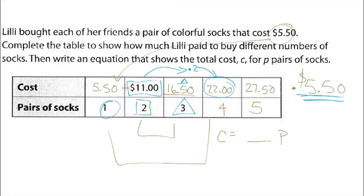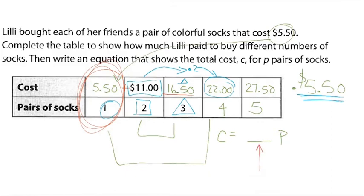The last part is finding the unit rate for the equation. The unit rate is the one with a denominator of one, which is our first row: $5.50 per pair. That goes into the equation. So the cost equals $5.50 times the number of pairs of socks that Lily buys.